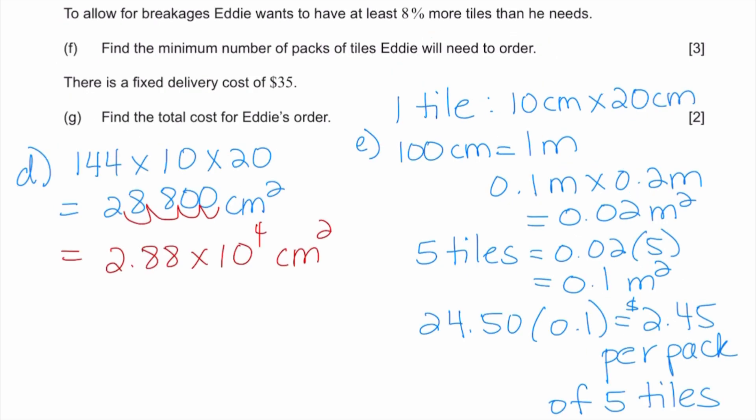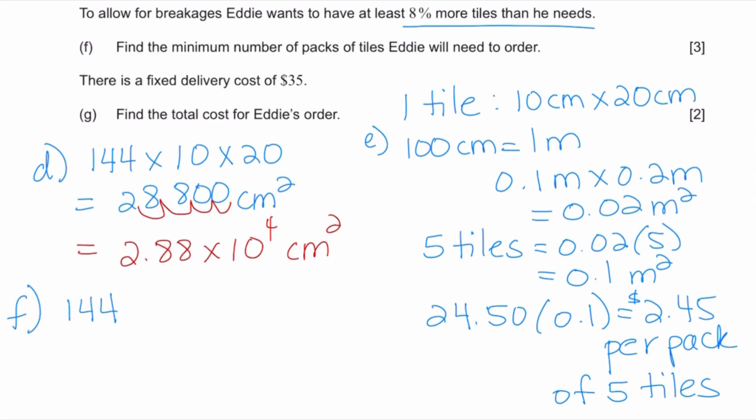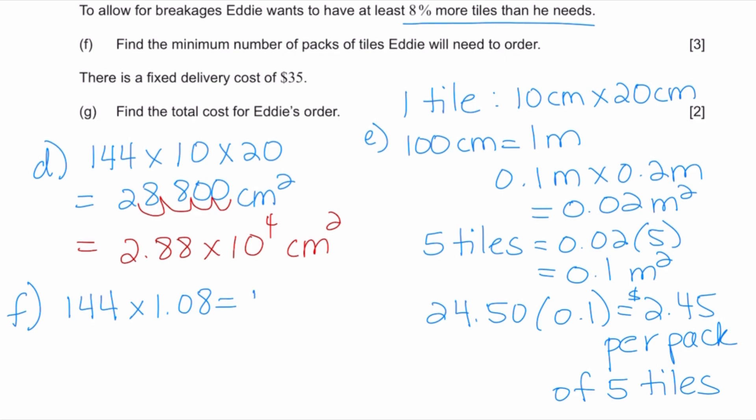Let's continue. To allow for breakages, Eddie wants to have at least eight percent more tiles than he needs. Find the minimum number of packs of tiles Eddie will need to order. Eddie needs 144 tiles, but you want to make sure that you get an extra eight percent. So I can either find eight percent of 144 and then add it to the 144, or I can do this all in one calculation by multiplying by 1.08 percent. In other words, that's a hundred percent that he needs plus the additional eight percent. So this gives me 155.52 tiles that he needs, but you have to remember they are going to sell you these tiles in packs of five.